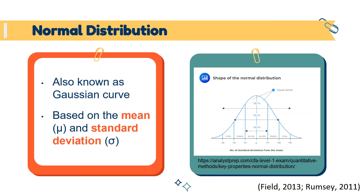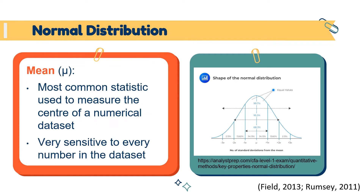When we're talking about norms or a normal learner, we're talking about normal distributions — just think bell curves. This assumes that findings are evenly distributed around the mean or the average. Some key terms here are mean and standard deviation. The mean is also known as the average; it's the most common statistic used to measure the center of a numerical data set, and it's very sensitive to every number in the data set. An issue is that the mean may not be a fair representation because it can be influenced by outliers — extreme values on either end of the spectrum.